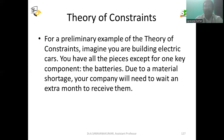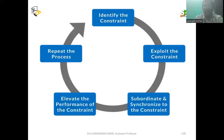Imagine you are building electric cars. You have all the pieces except for one key component — the batteries. Due to a material shortage, your company will need to wait a month to receive them. That is a major constraint because without the battery, you cannot sell the product to the customer. This delay is a significant constraint for that particular product.